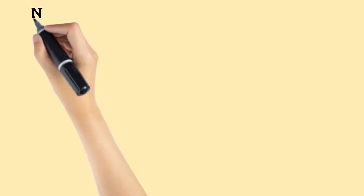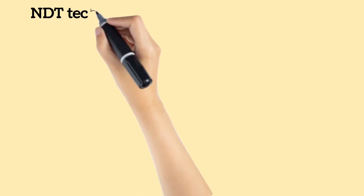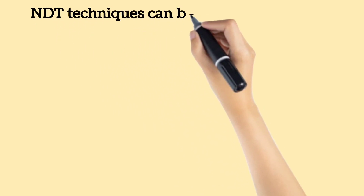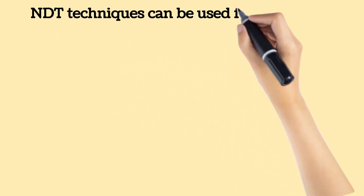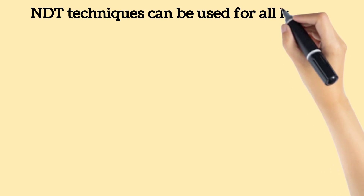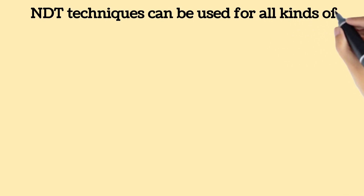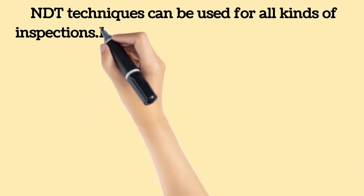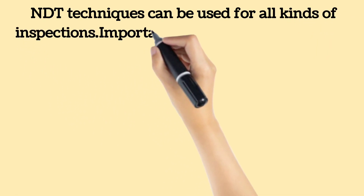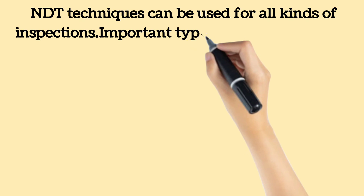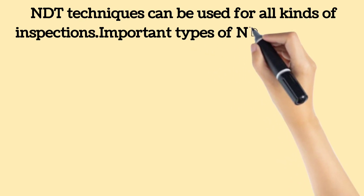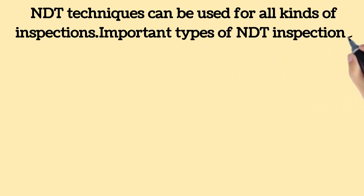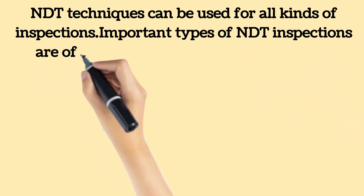NDT techniques can be used for all kinds of inspections. But some of the most important types of NDT inspections are of assets like boilers and pressure vessels, which could be incredibly dangerous if not properly maintained.